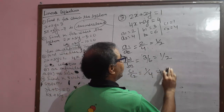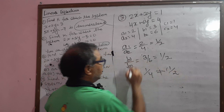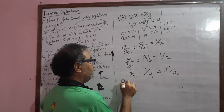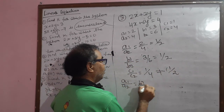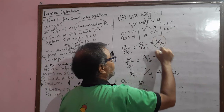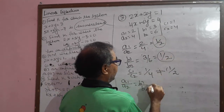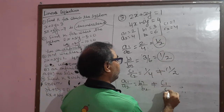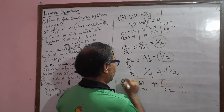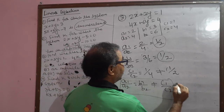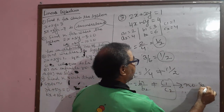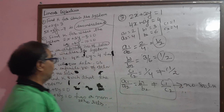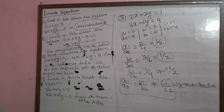So a1 by a2 equal to b1 by b2 — both are equal, equal to 1 by 2 — but not equal to c1 by c2, which is 1 by 4. This condition corresponds to no solution. Therefore the answer is no solution.